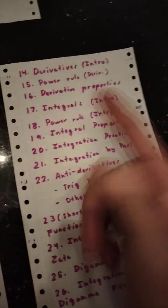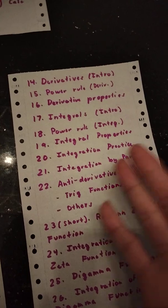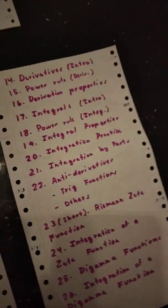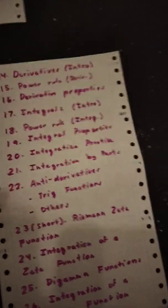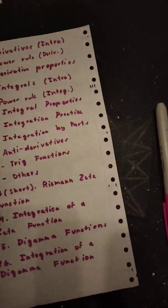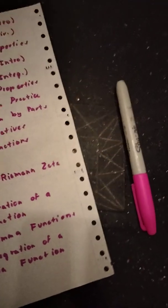Episode 16 deals with derivative properties which of course includes the power rule and a couple more. And then 17 we're going to move on to integrals and the intro. Episode 18 follows through with the power rule for integrals. Yes, they both have the same name but are different things. And then 19 is going to be integral properties.